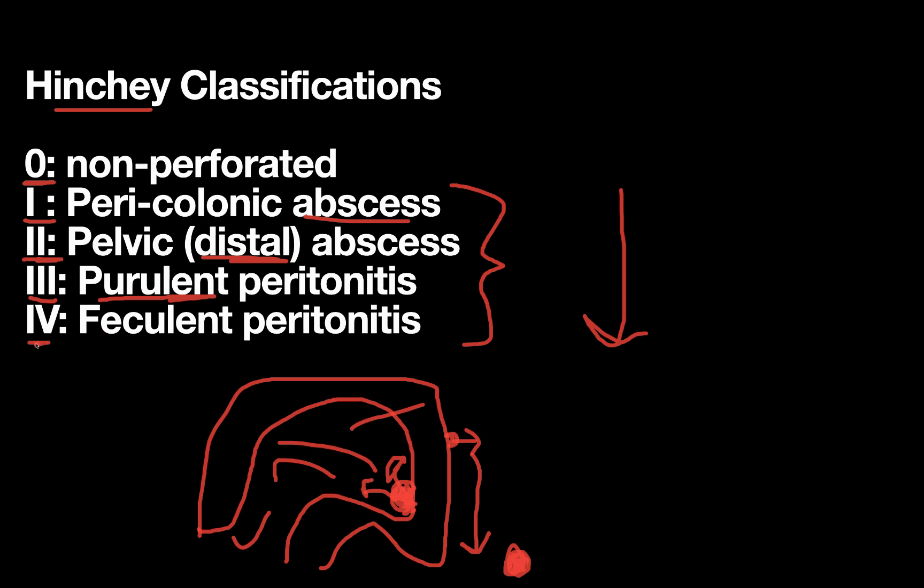Then lastly, and most severe is Hinchey class four, which is feculent peritonitis, which as you might guess by the name, means that not just an abscess perforates, but actually your whole colon perforates, and you're just leaking stool all over the belly, causing really severe peritonitis and abdominal pain.